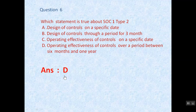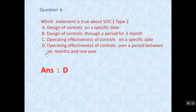For question number 6, remember the Type 1 vs. Type 2 slide. Type 1 report is a point-in-time report focused on the design of controls. Type 2 report is applicable for a period and focuses on design, operating effectiveness, and results of tests performed by the auditor. Only option D satisfies the conditions for a Type 2 report. Hence the correct answer is D.